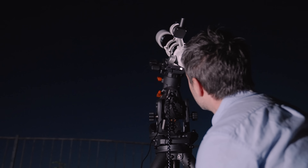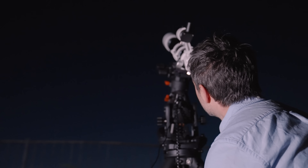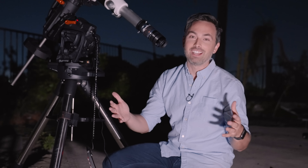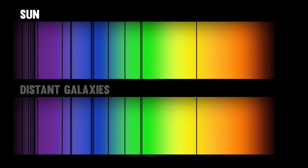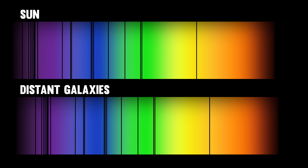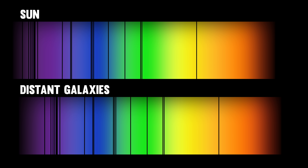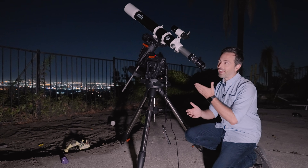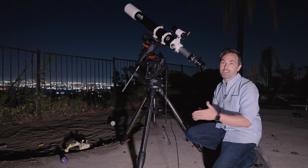The first piece of evidence that showed our universe is expanding came in the light from distant galaxies. If you look at the spectrum of the sun, you see these dark lines, and we see those same lines in the spectra from galaxies, except they're shifted to longer wavelengths towards the red end of the spectrum. So we say their light is redshifted.